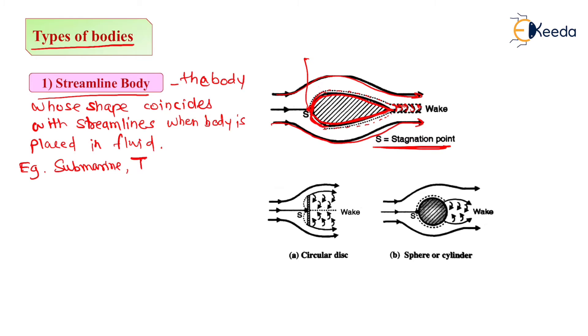So its example is submarine. Bomb shells which are used in submarine are called as torpedo. So it is having streamline shape, spaceship, and aeroplanes.